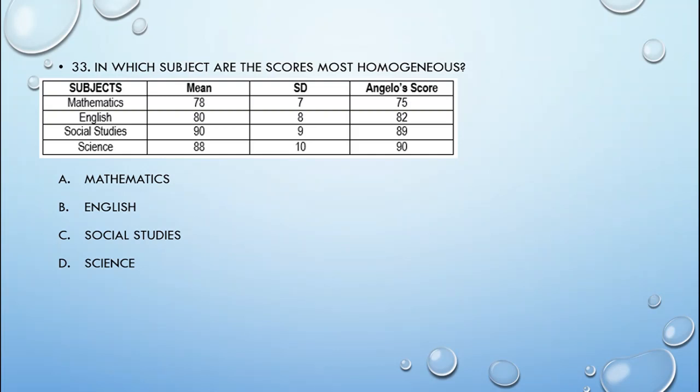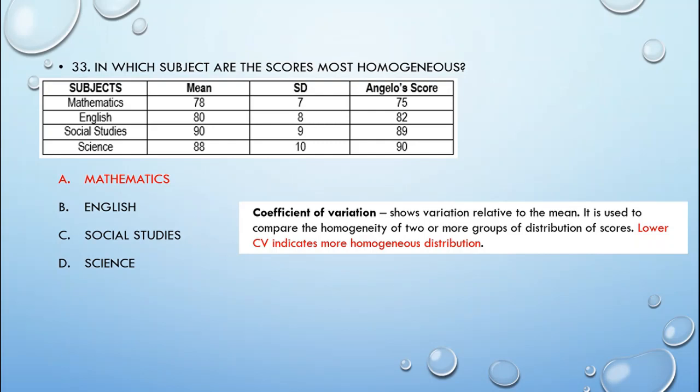Number 33. In which subject are the scores most homogeneous? The answer here is A, mathematics. To determine the homogeneity of scores in a group or subject, we have to use the coefficient of variation. It shows the variation relative to the mean. Coefficient of variation is used to compare the homogeneity of two or more groups of distribution of scores. The lower the CV or the coefficient of variation indicates more homogeneous distribution. This can be computed by dividing the standard deviation by the mean.